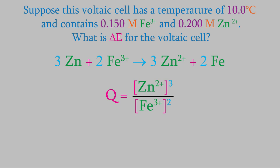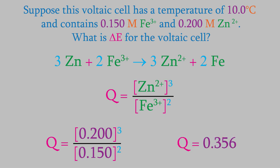The zinc ion is on the product side of the reaction, so 0.200 goes in the numerator, and the iron concentration goes in the denominator. That gives us a value of Q of 0.356.